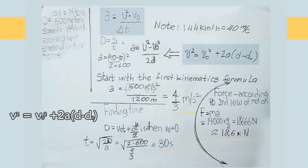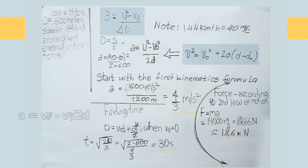V squared equals V0 squared plus 2 times acceleration times the change in distance. So, we can rearrange that as acceleration equals 1600 meters squared per second squared divided by 1200 meters, that is equal to 4/3 meter per second squared.